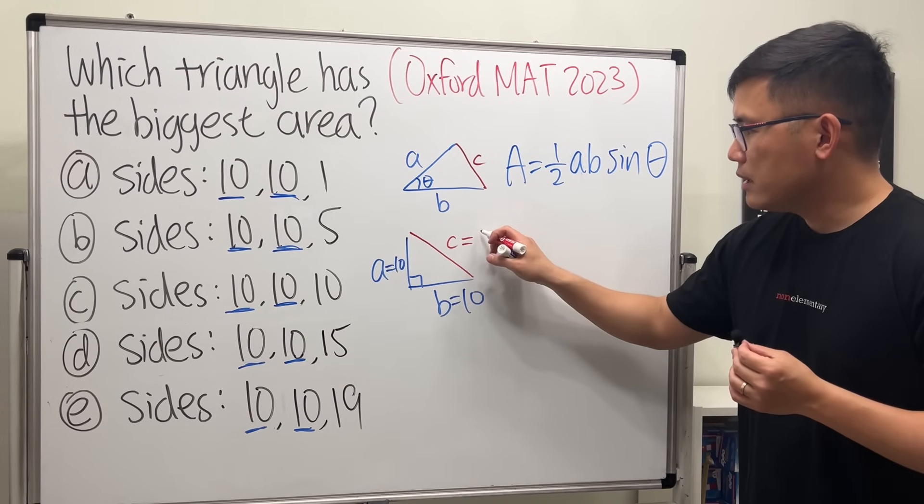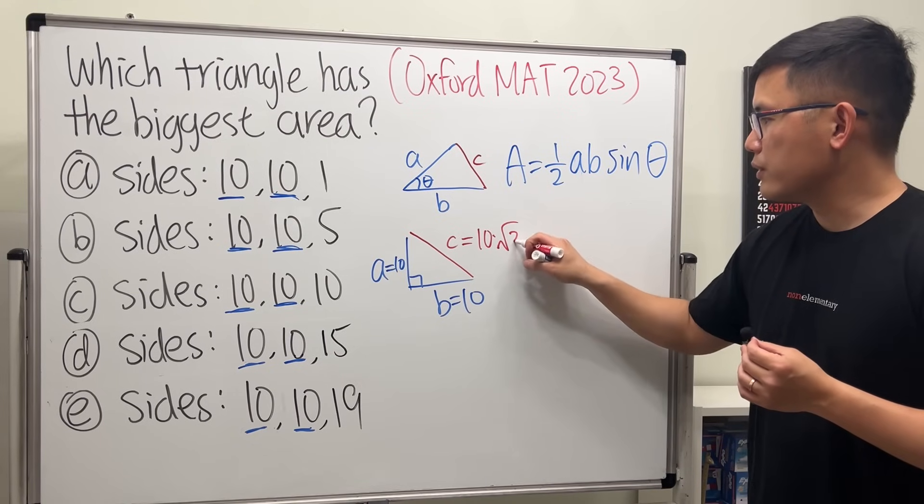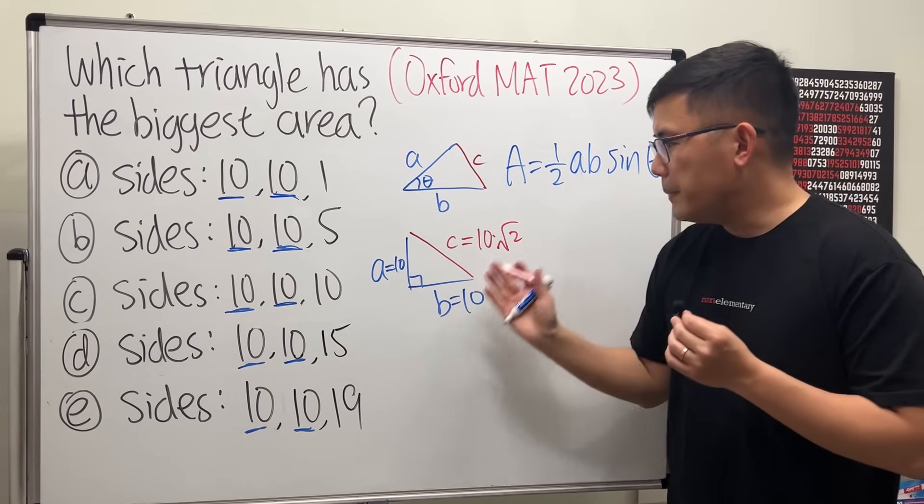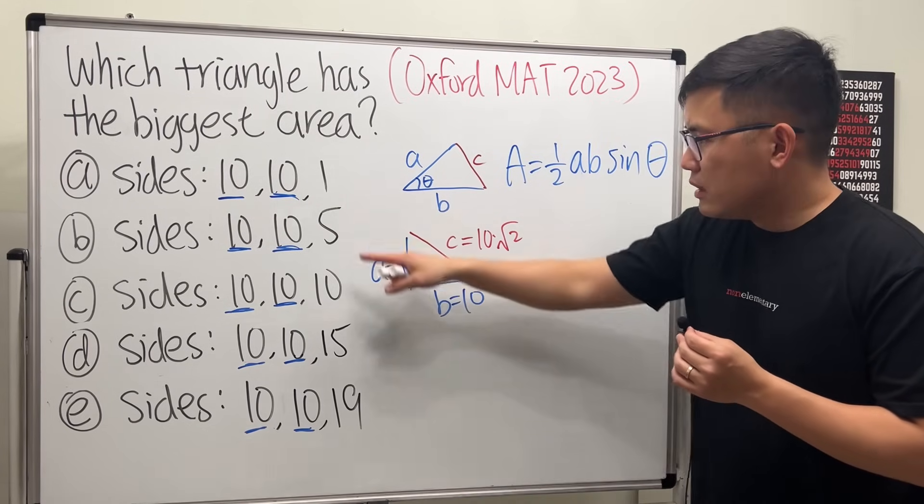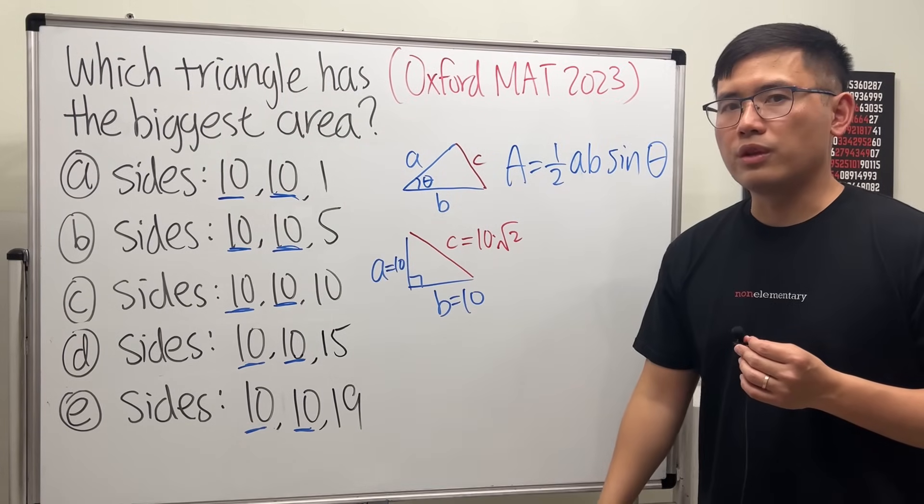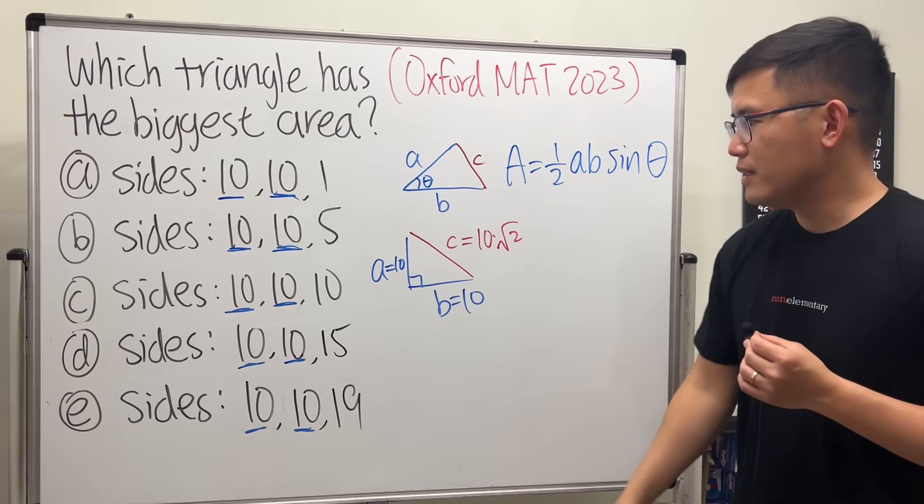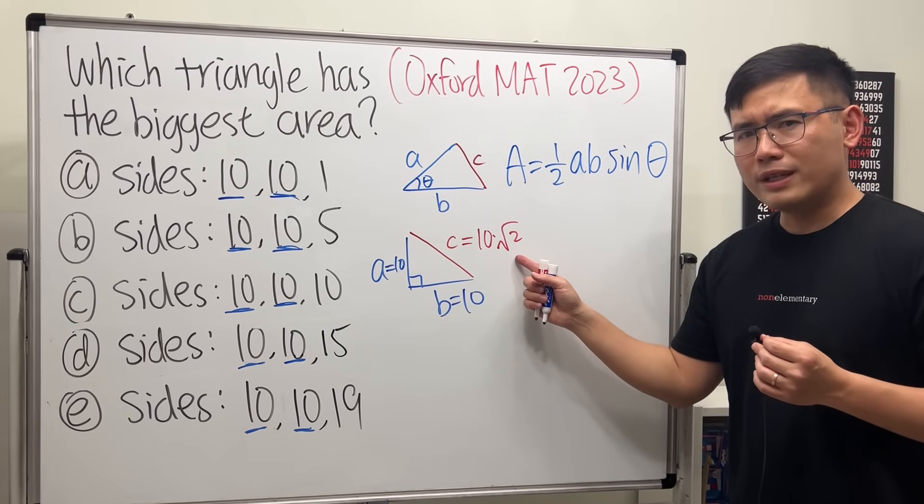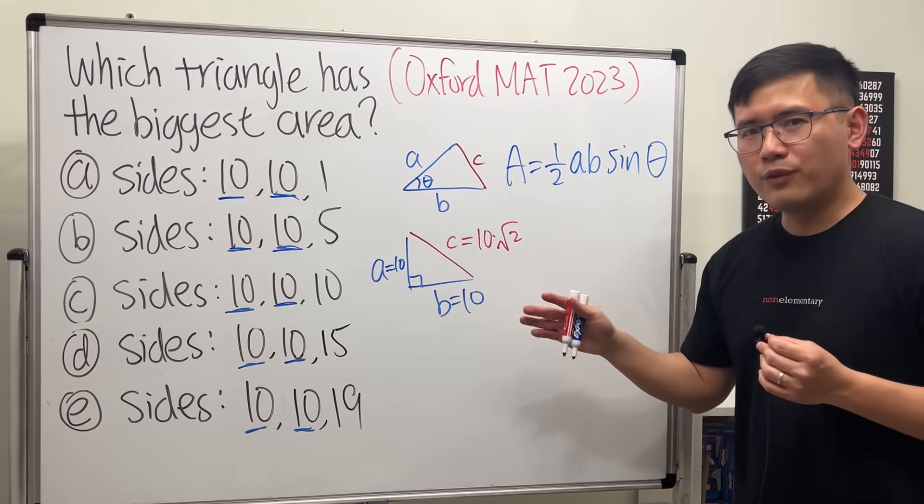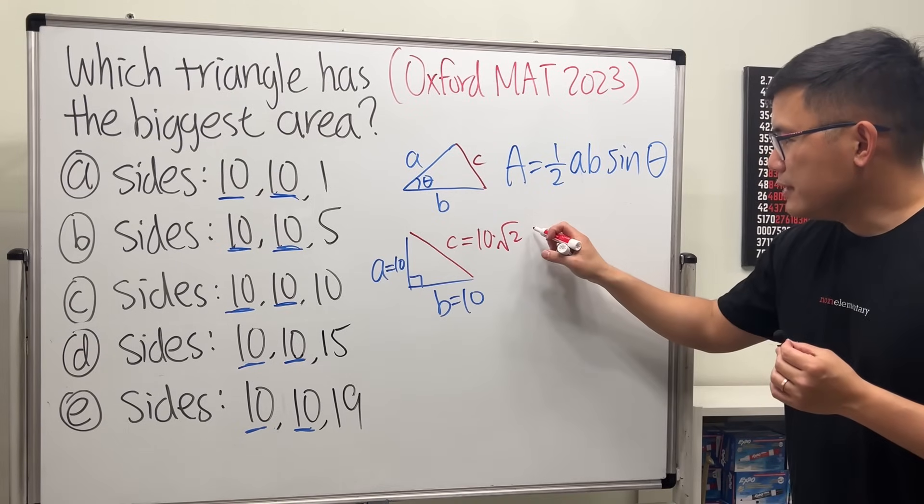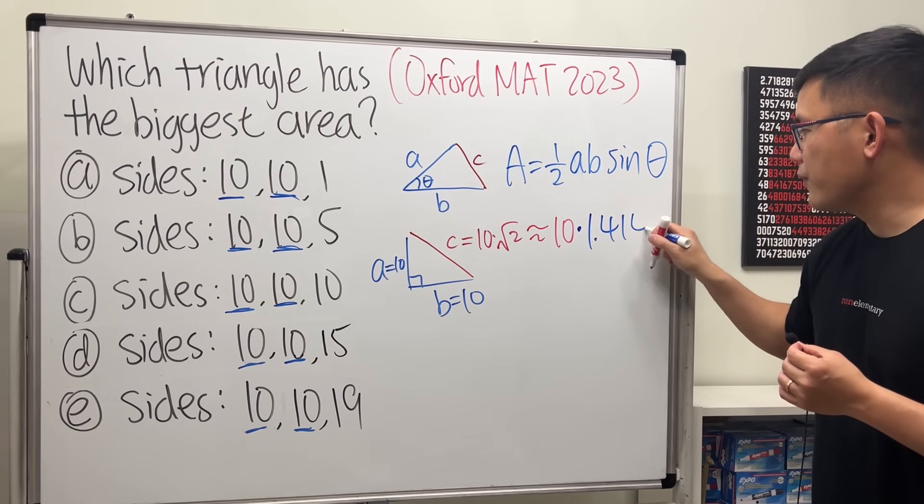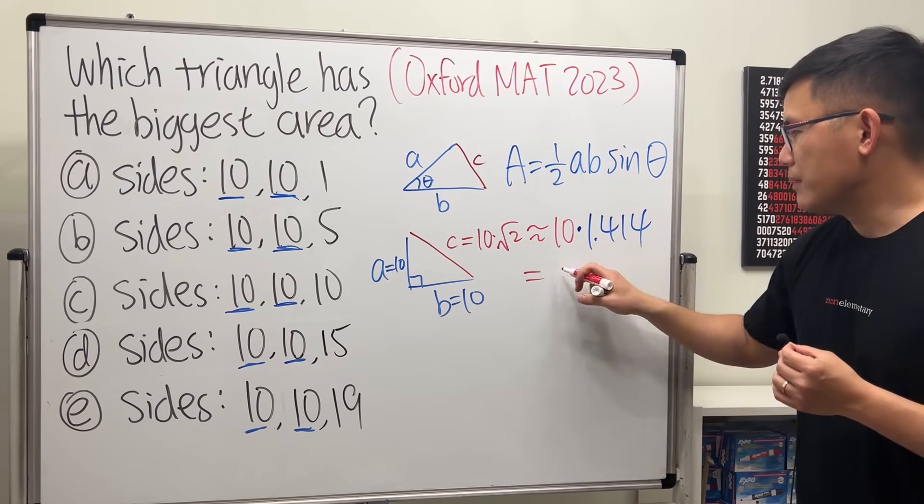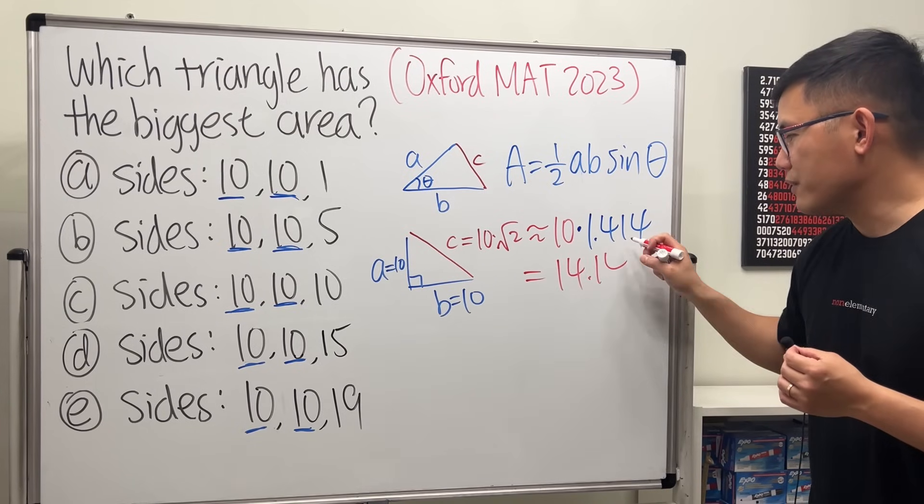But none of these is 10 square root of 2. Don't worry though - square root of 2 is about 1.414, right? So this is approximately 10 times 1.414, which is about 14.14.